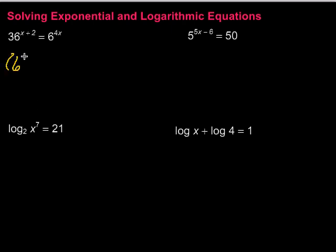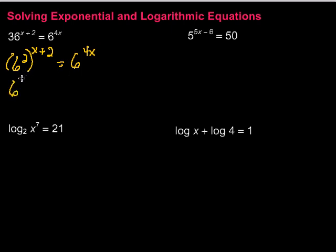So, I'll have 6 squared to the x plus 2 power, and that's equal to 6 to the 4x power. Now, we have a little bit of a mess, but we can take care of it. When we have a power to a power, we multiply those exponents. So, we get 6 to the 2x plus 4 power — be careful, multiply that 2 by each piece — and that equals 6 to the 4x power.